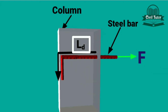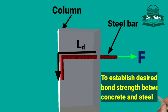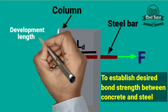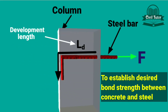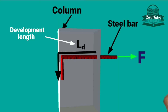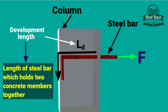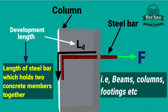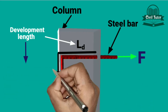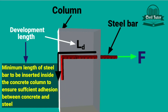This minimum length of steel bar to be provided inside the column to establish desired bond strength between concrete and steel is known as development length. Development length is the length of steel bar which holds two concrete members together — that is, beams, columns, footings, etc. It is the minimum length of steel bar to be inserted inside the concrete column to ensure sufficient adhesion between concrete and steel.